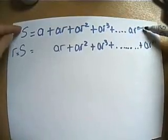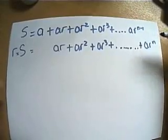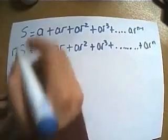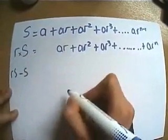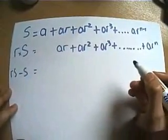Watch what happens when we do a subtraction. If I do this line take away that line, or that line take away that line, it doesn't really matter which way around we do it. Watch what happens. I'm going to do the second line take away the first line. So if I do this take away this, I've now got rs minus s over on this side. This rs take away this.